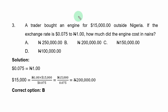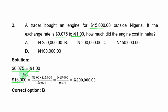Question 3: a trader bought an item for $15,000 outside Nigeria. If the exchange rate is 0.075 dollars to 1 naira, how much did the item cost in naira? Using the exchange rate, you multiply 15,000 by 1 and divide by 0.075 to convert to naira, giving 200,000 naira. The correct option is B.